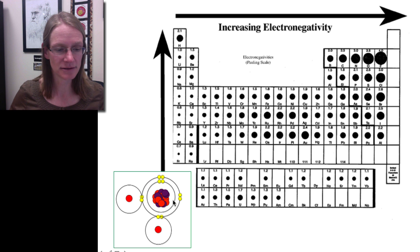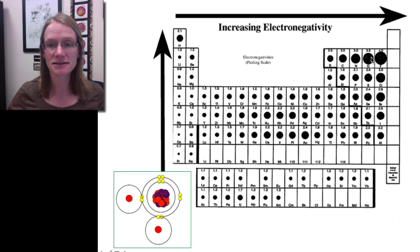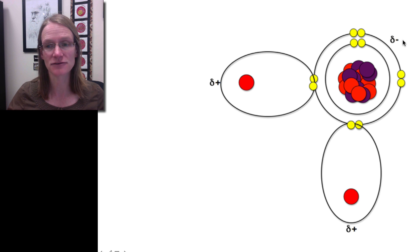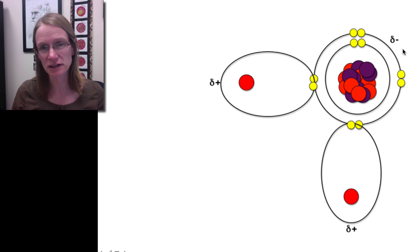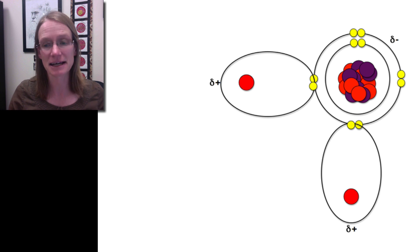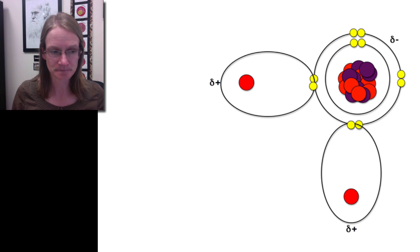We can picture the periodic table coded by electronegativity — the larger the dot, the greater the electronegativity, meaning they're going to attract electrons more to fill their valence shell. As you move across the periodic table, electronegativity gets greater, and as you go up in the periodic table, it also tends to be greater. Going back to the water molecule — here's the oxygen and here are the two hydrogens. We can see the hydrogen is a small dot and oxygen is a really big dot, so oxygen clearly has greater electronegativity and is going to fight for those electrons a whole lot more. Oxygen is pulling on the electrons more, so it has what's called a partial negative charge.